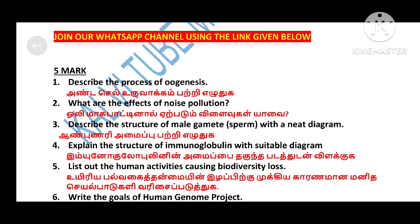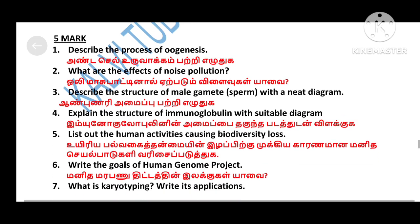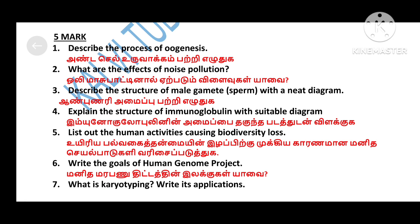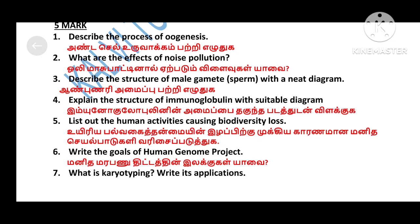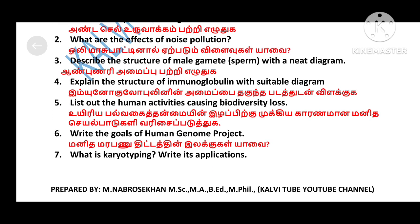For 5-mark questions: Describe the process of oogenesis. What are the effects of noise pollution? Describe the structure of male gametes (sperm) with a neat diagram. Explain the structure of immunoglobulin with suitable examples. List out the human activities causing biodiversity loss.